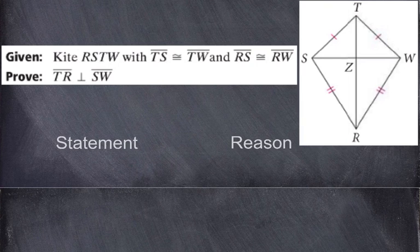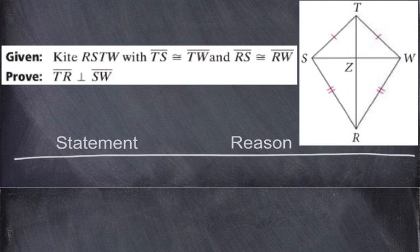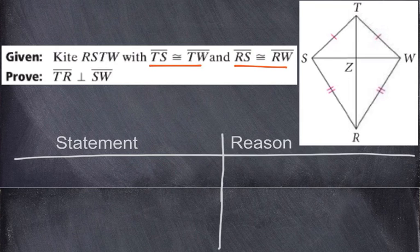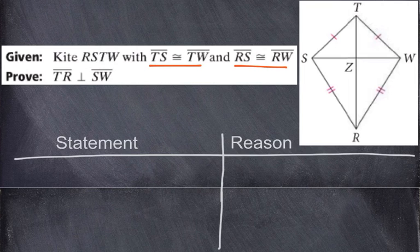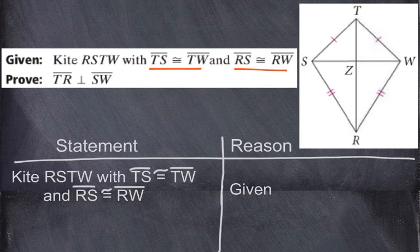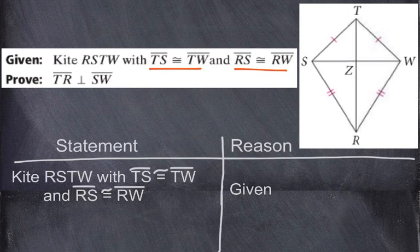We have kite RSTW with TS congruent to TW, and RS congruent to RW. This gives us the information about the kite — the two longer sides are congruent and the two shorter sides are congruent. Always start with the given. So our given is: kite RSTW, TS is congruent to TW, and RS is congruent to RW. We're trying to prove that TR and SW are perpendicular.